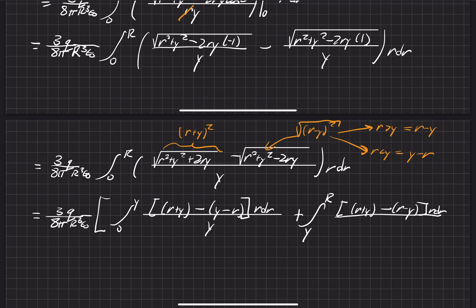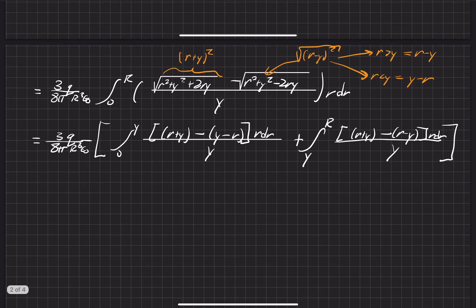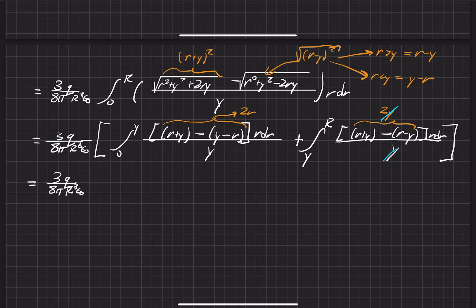Now we're in the home stretch. The first bracket simplifies to 2R, and the second bracket simplifies to 2Y, which cancels the Y at the bottom. So these collapse down into pretty easy integrals: the integral from 0 to Y of 2R squared over Y dR, plus the integral from Y to big R of 2R dR.